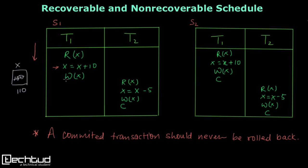T1's commit is at the very end. Transaction T2 starts and reads the value of X, which is now 110. It decreases the value by 5, making it 105, and writes back. So X becomes 105, and then transaction T2 commits. Commit means it writes the value back to disk.